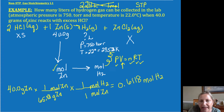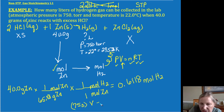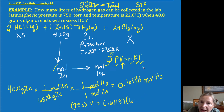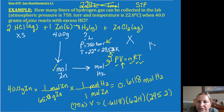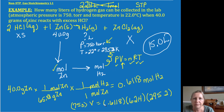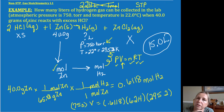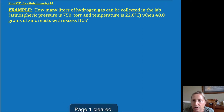Now I can plug that into the ideal gas law. I have 750 Torr, I don't know my volume, and I now know my moles from dimensional analysis. For R, you have to match your pressure units, so that would be 62.4. And make sure you use Kelvin — always Kelvin. The volume I got was 15.0 liters. That's how I incorporate PV=nRT: it's typically dimensional analysis and then PV=nRT, or vice versa. If you lay out the givens underneath, you should be able to determine that.